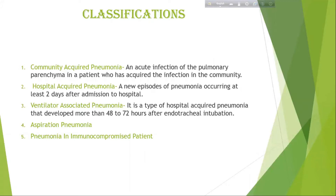Different types of pneumonia. Community-acquired pneumonia: An acute infection of pulmonary parenchyma in a patient who has acquired the infection in the community, that means infection outside the hospital. Hospital-acquired pneumonia: A new episode of pneumonia occurring at least two days after admission to hospital.